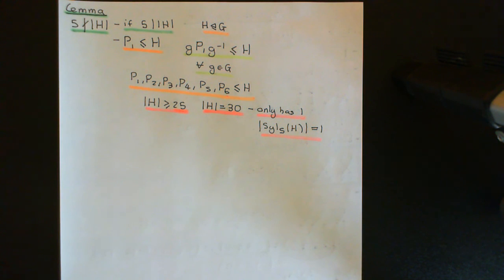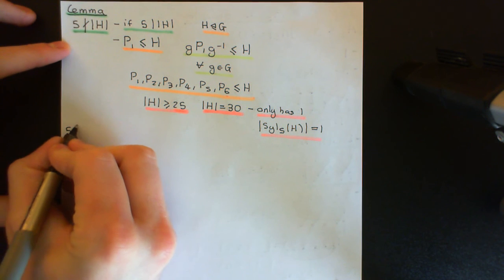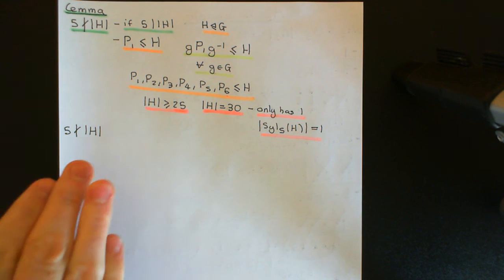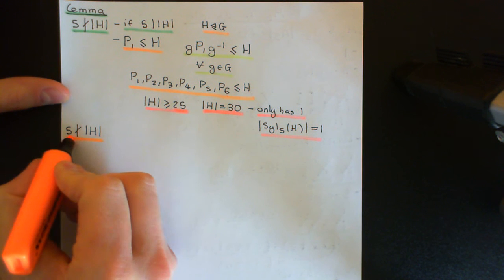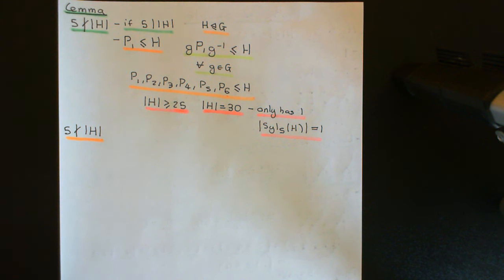So we can conclude that this normal subgroup H cannot have order that is a multiple of 5. This hugely restricts what orders it can have — 5 does not divide the order of H. We'll have a break there. Go over this argument if you're not totally happy with it yet. In the next video, we'll move on to the other orders that H could take on and prove that those aren't possible either, completing the proof that A5 is simple.